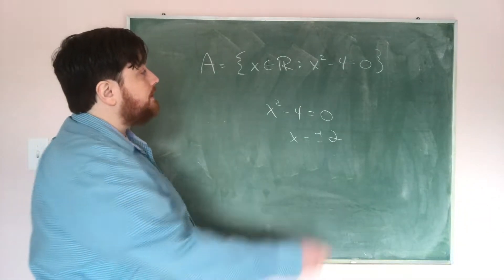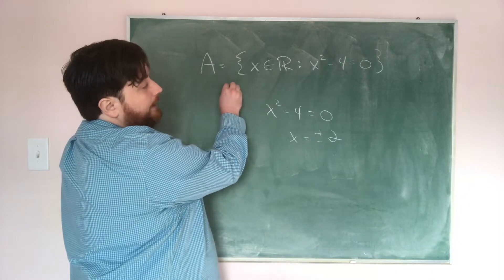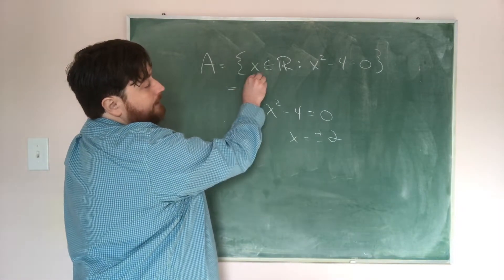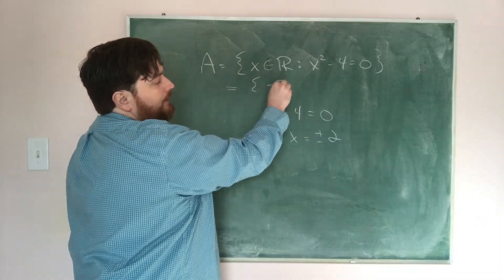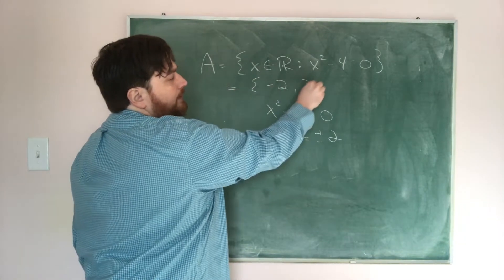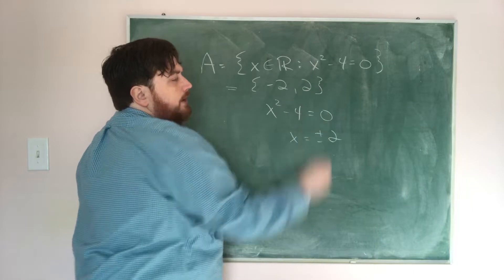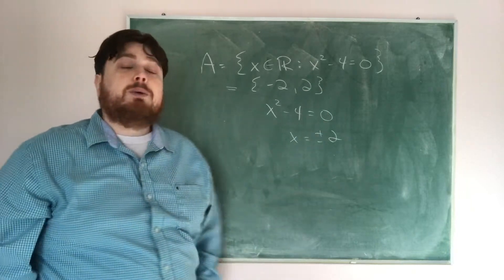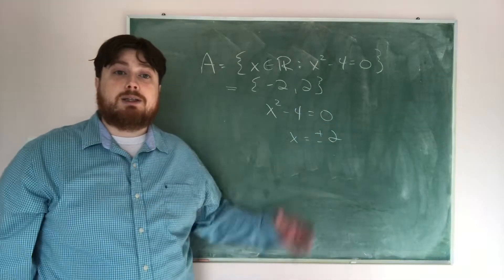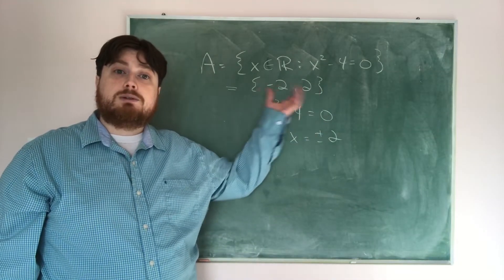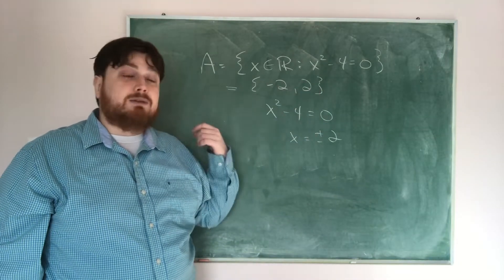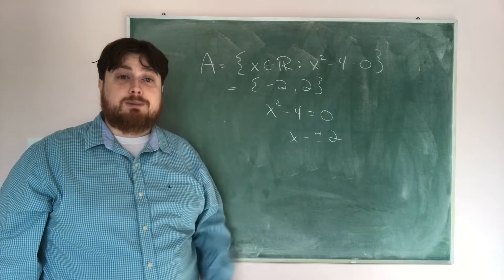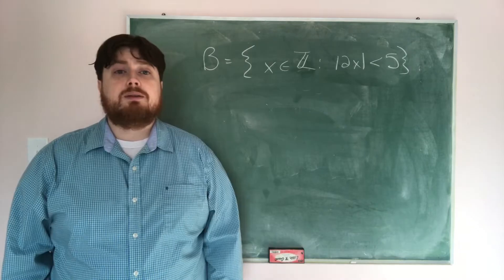So what we can say is that set A is precisely equal to the set {-2, 2}. We've taken a set given in rule form and rewritten it by listing out the elements of that set.